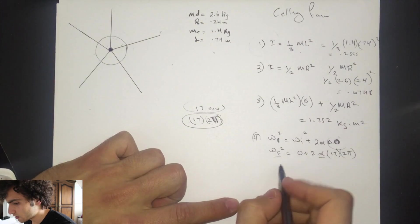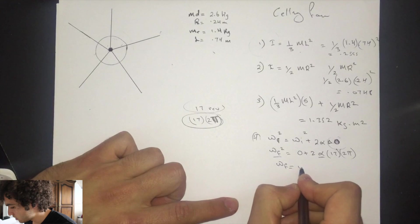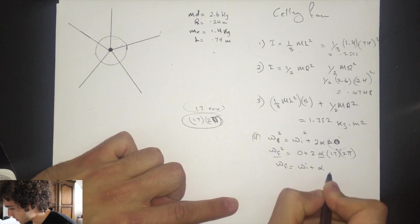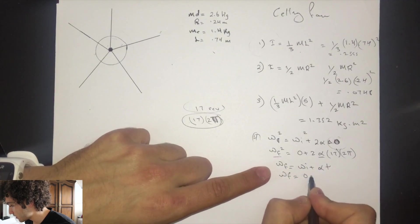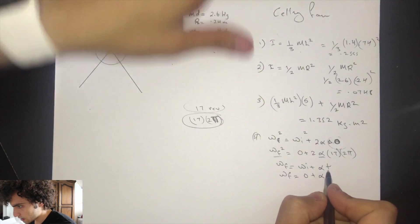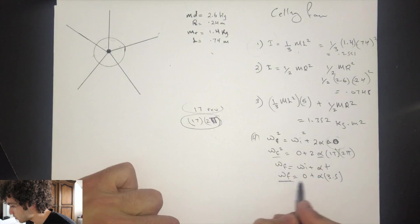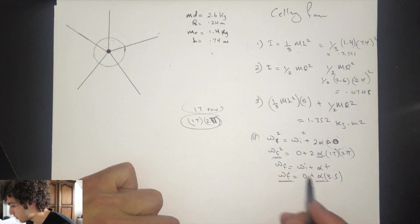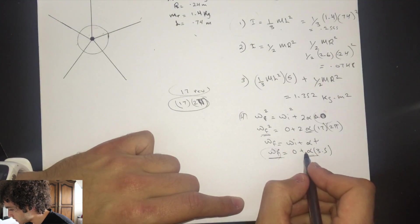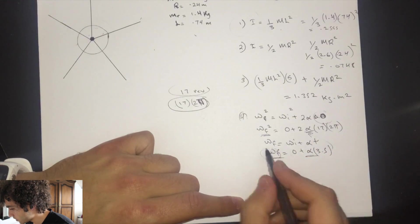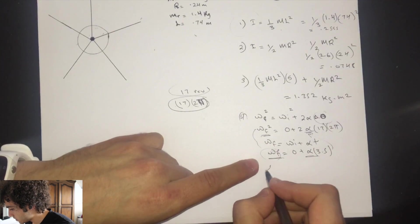We have two unknowns, so we need another equation. We'll use: omega final equals omega initial plus angular acceleration times time. The final equals zero plus alpha times t, and the time given is 3.5 seconds. Now we have two equations and two unknowns, so we can substitute this expression for omega final into the first equation and square it.